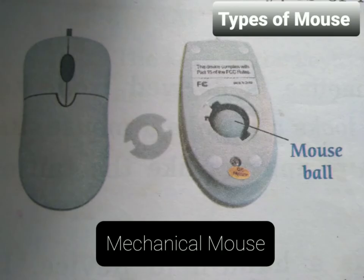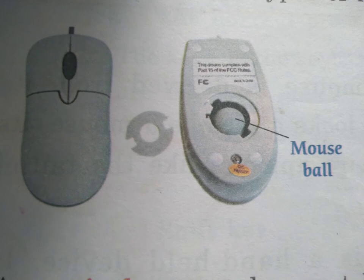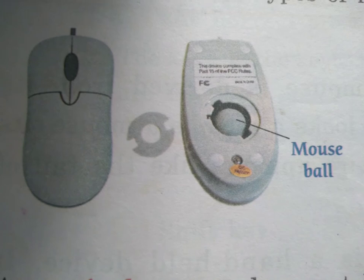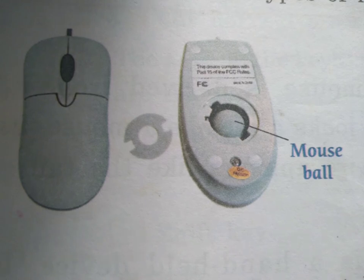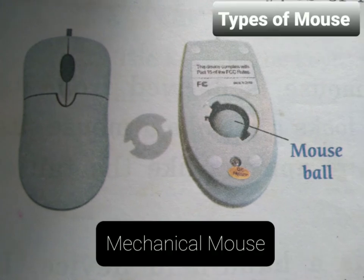First one is mechanical mouse. A mechanical mouse has a rubber or metal ball on its underside, which helps the mouse to move in all directions. The mouse cannot function without this ball.